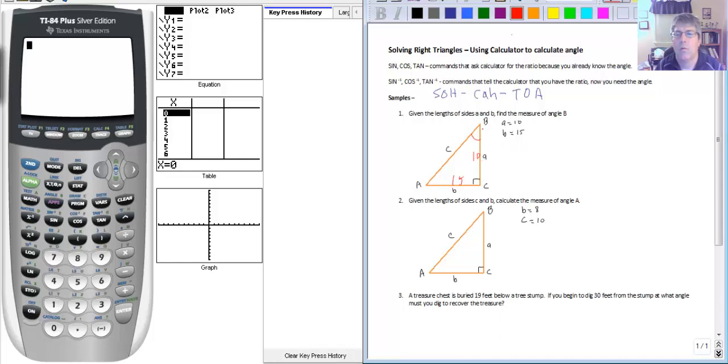So we need a trig function that involves opposite and adjacent. Well that's tangent. So the tangent of angle B equals 15 over 10.